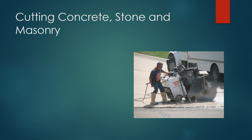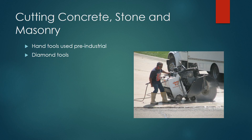Cutting concrete, stone, and masonry is very important in the concrete construction industry. In pre-industrial times, hand tools and sand slurry were used to cut concrete. Now diamond tools are used. Diamond tools are made of industrial diamonds that are mostly synthetic, making cutting concrete precise.